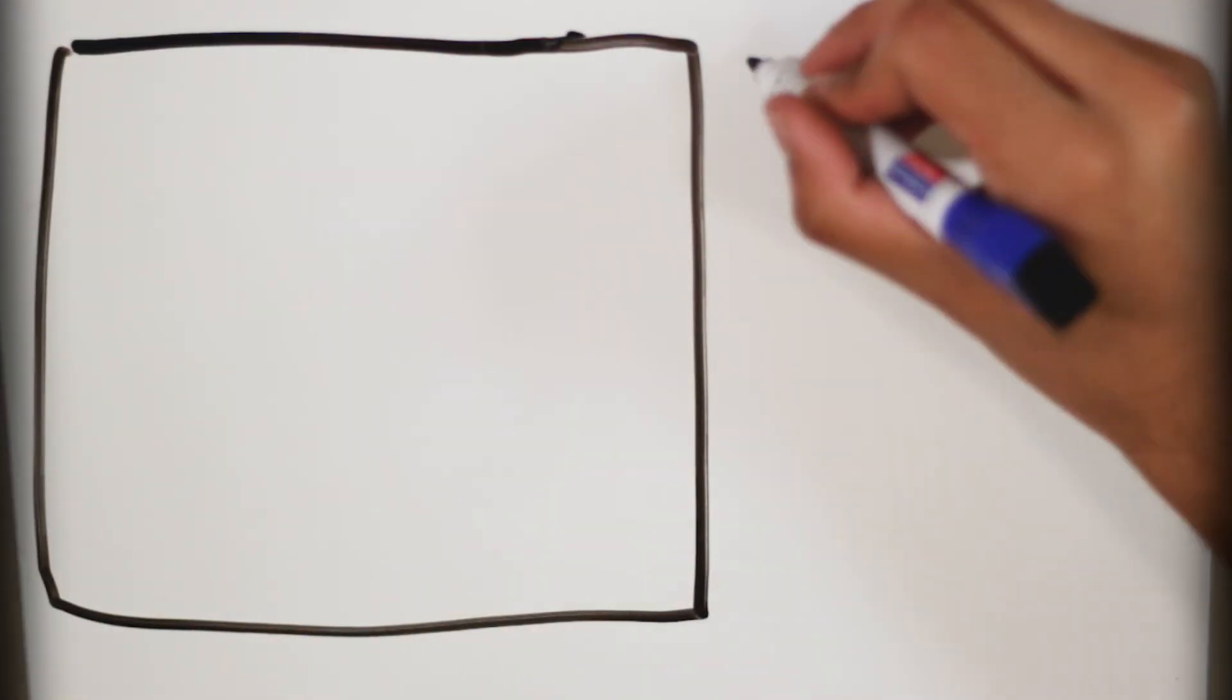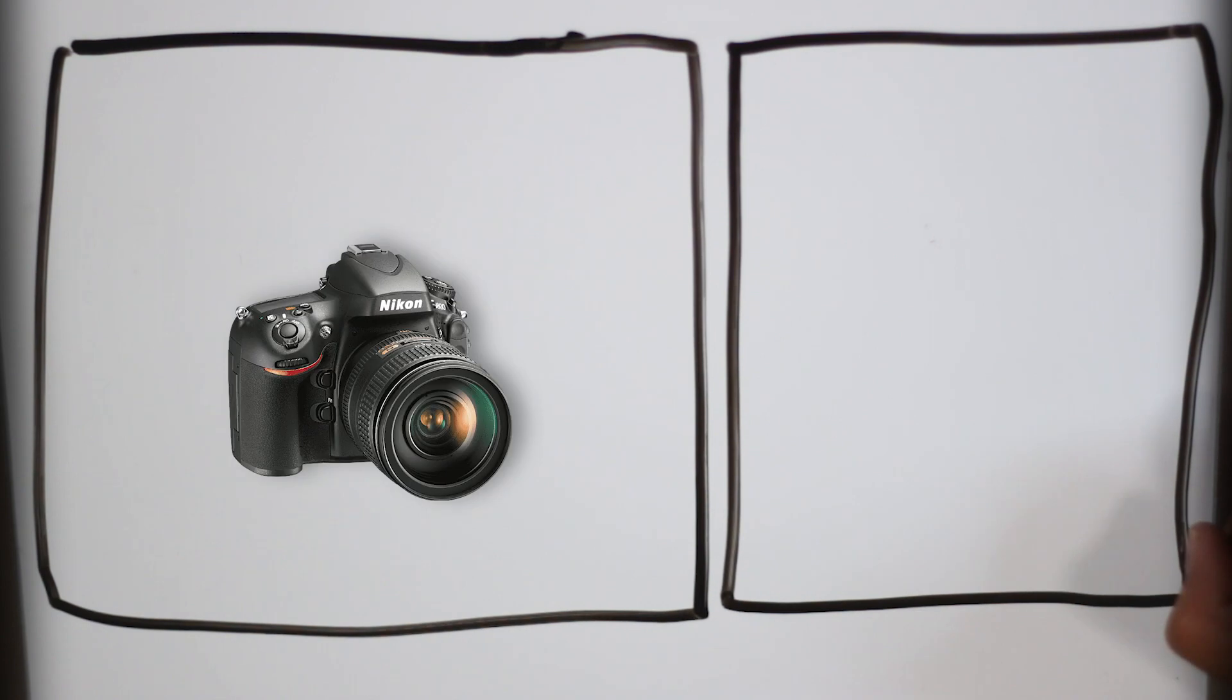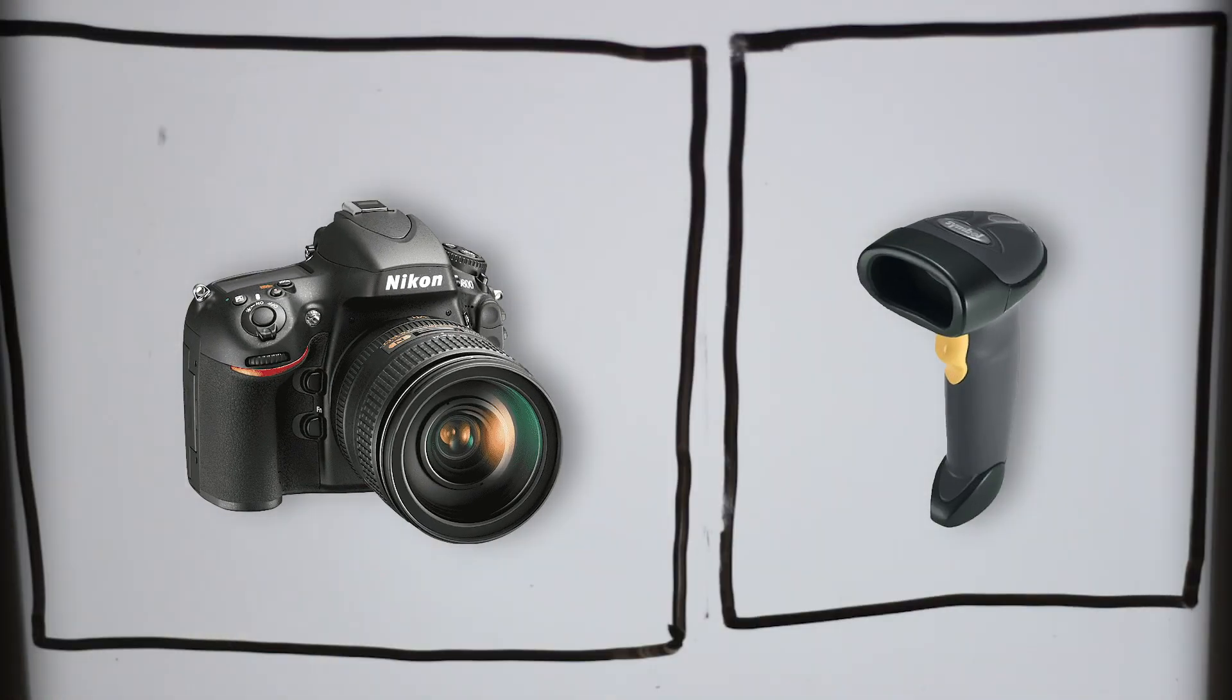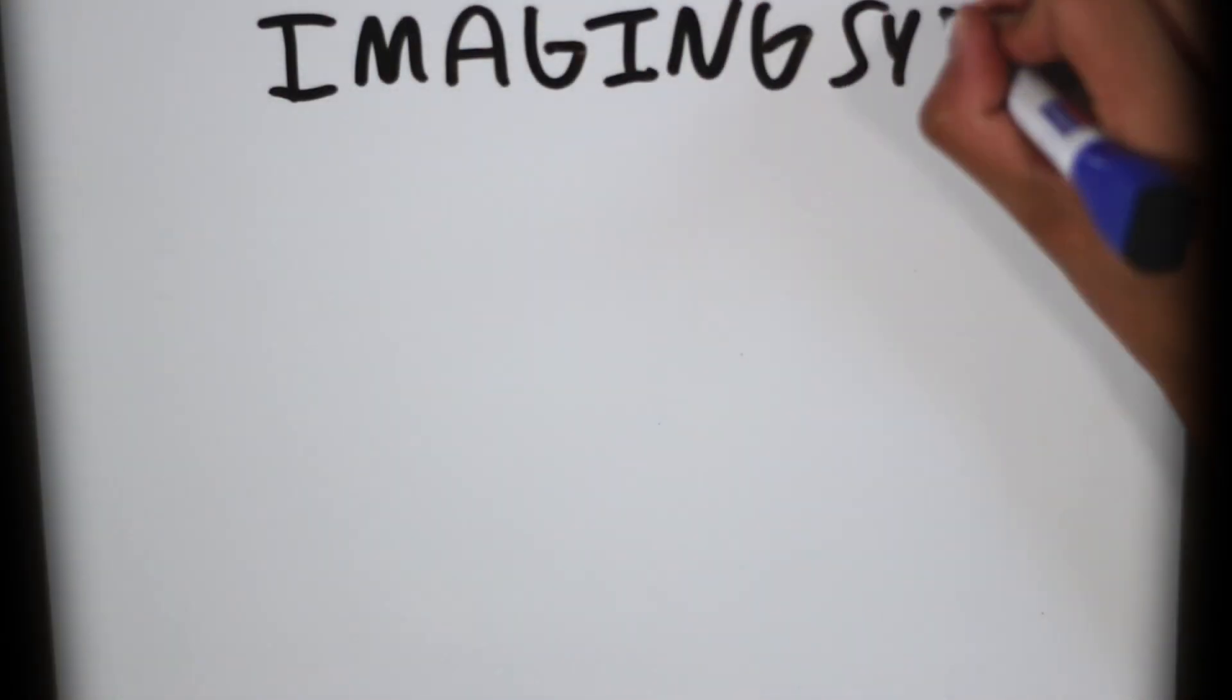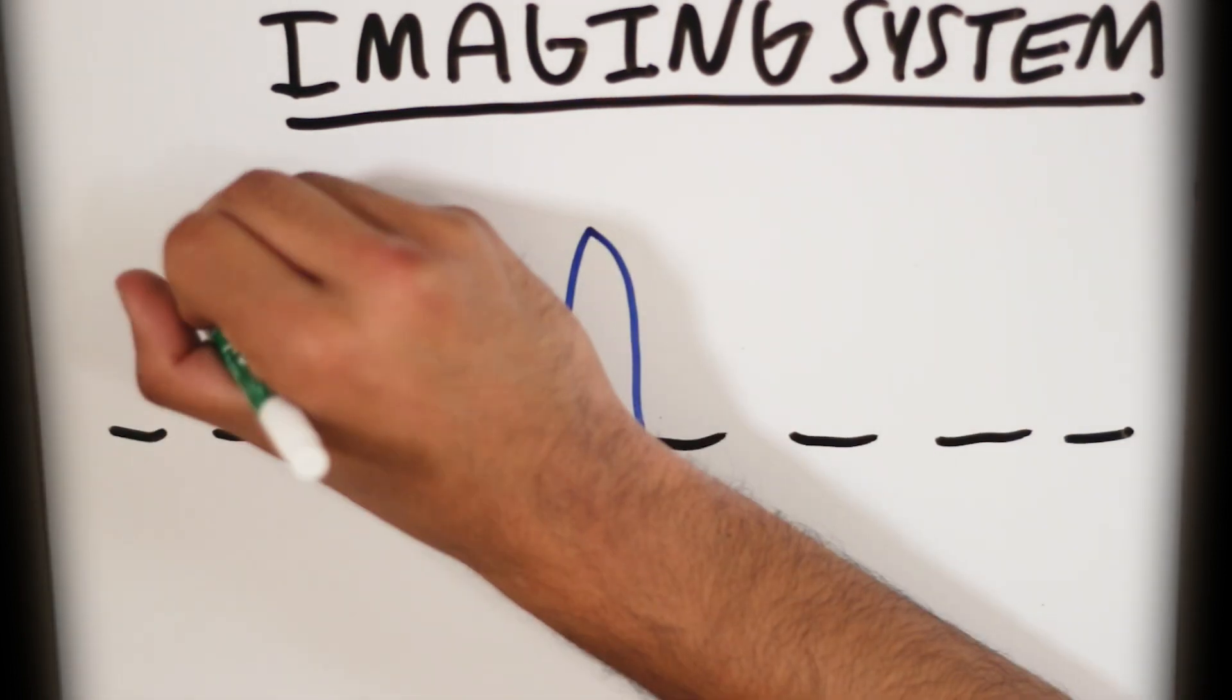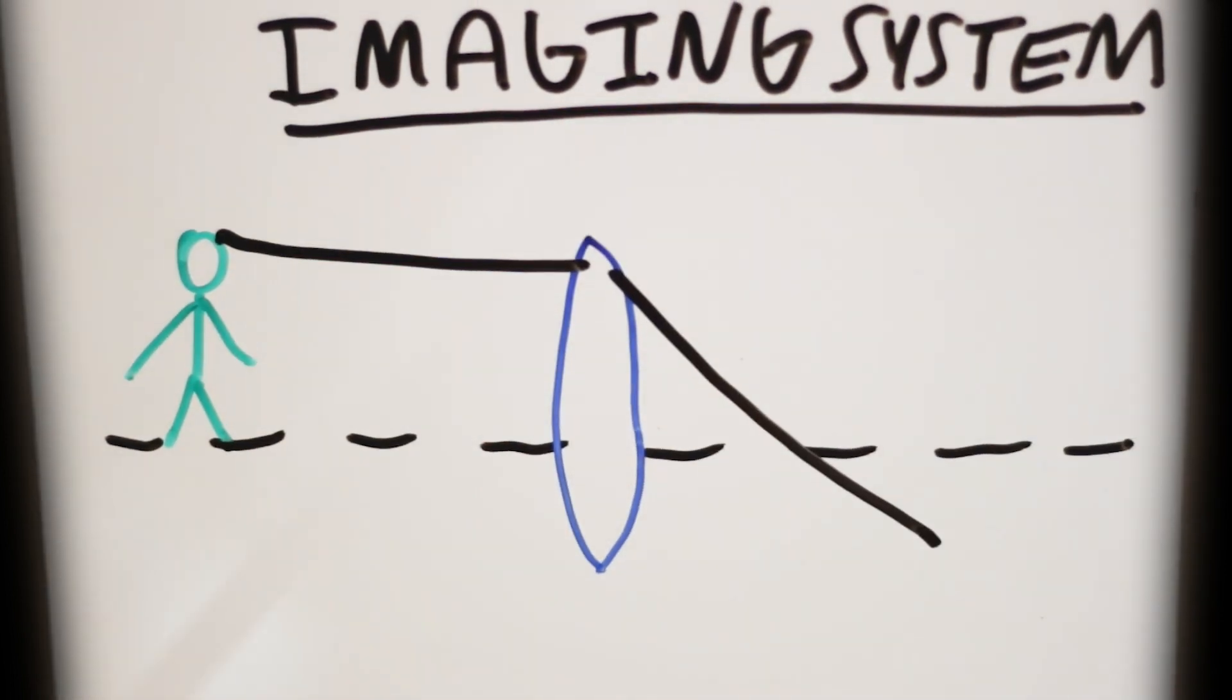In fact, the technology we use to scan and process all those ballots involves the same engineering that went into making this and this. All of this is made possible through imaging systems, which take in beams of light and condense them down into an image.